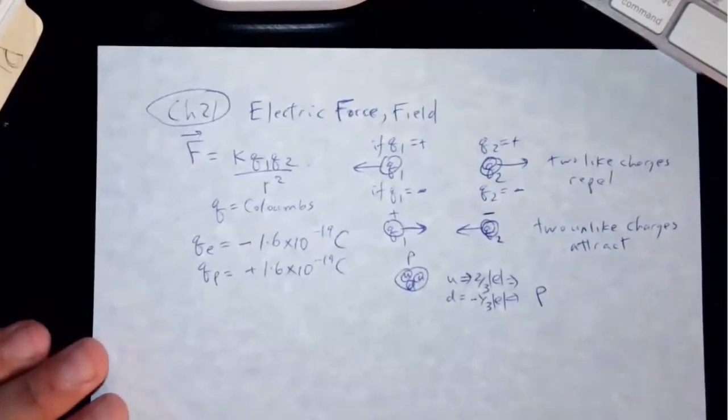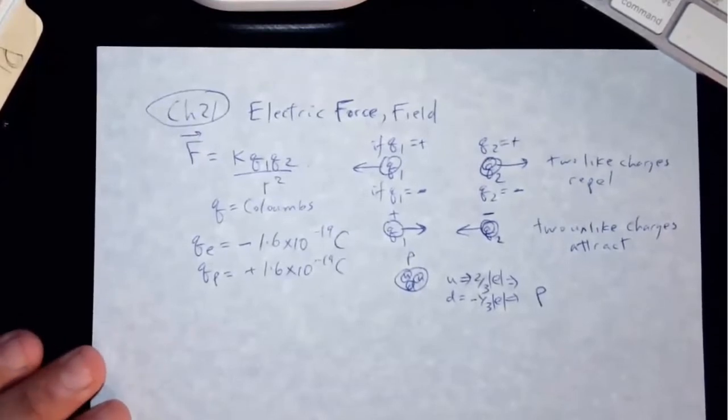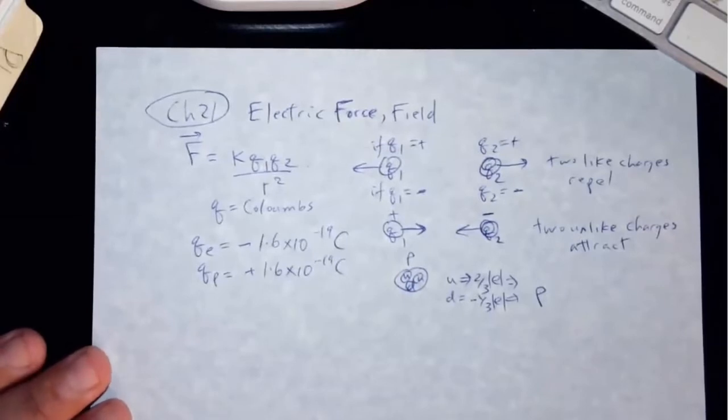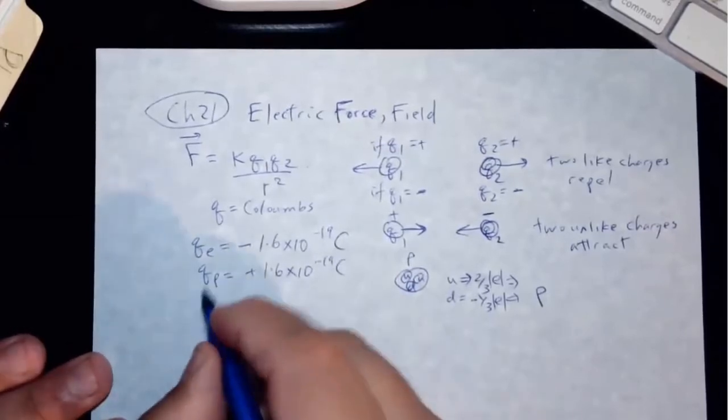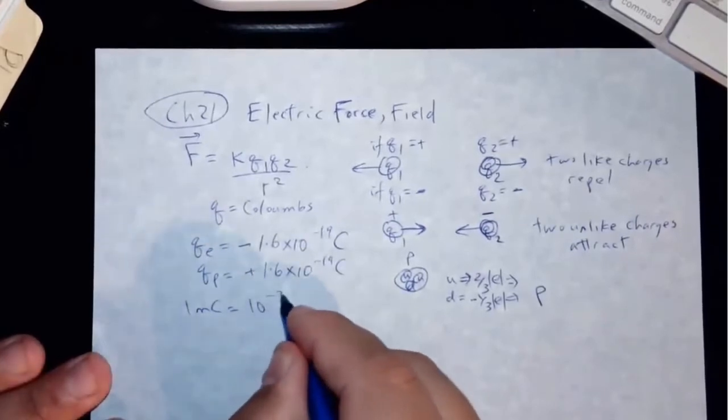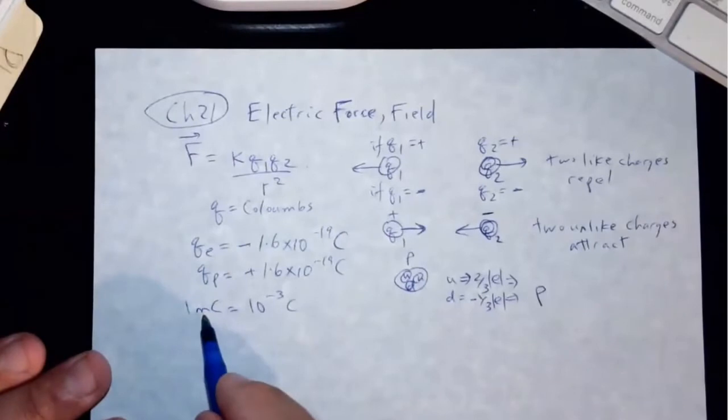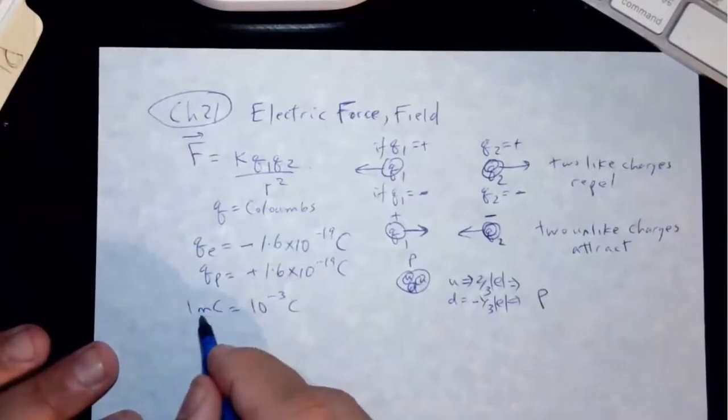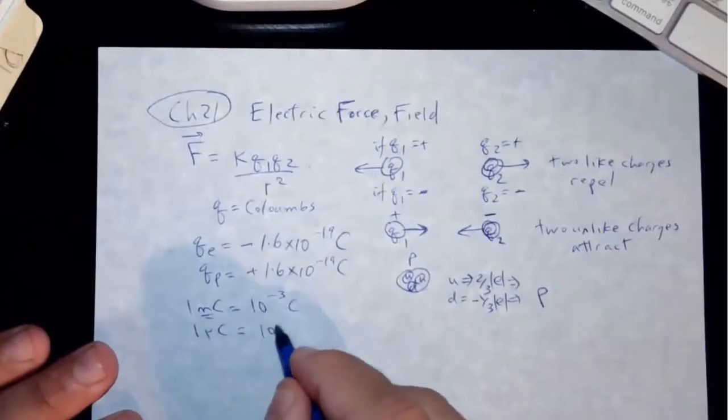So the charge of the Coulomb, one Coulomb is pretty large. So most everyday charges that we encounter are going to be fractional charges of the Coulomb. So one MC is going to be a millicoulomb. So a lot of times we're going to be using these symbols. One microcoulomb is 10 to the minus 6.